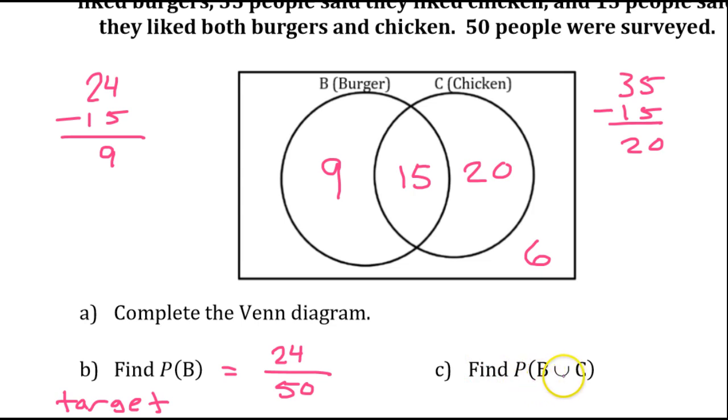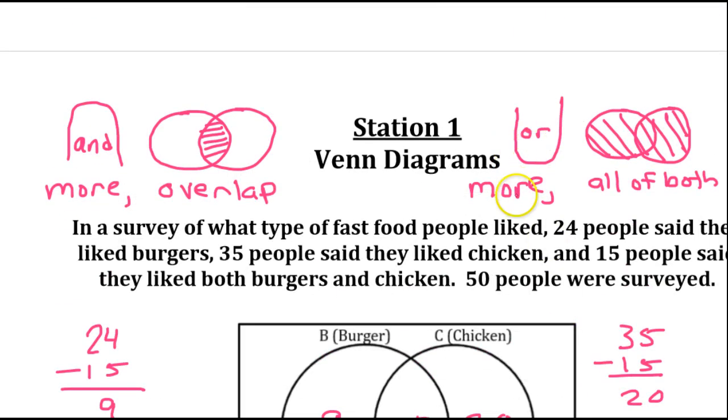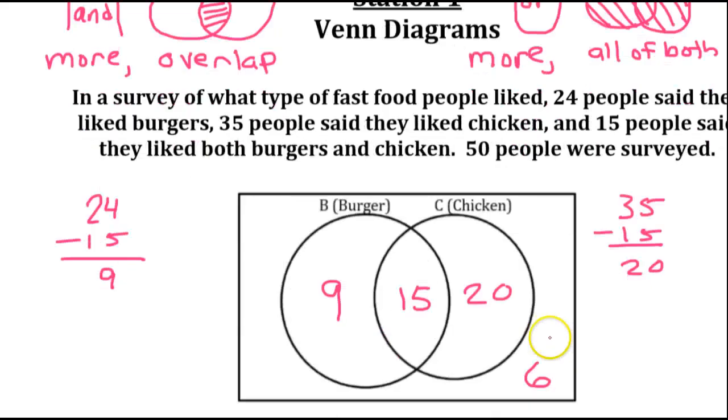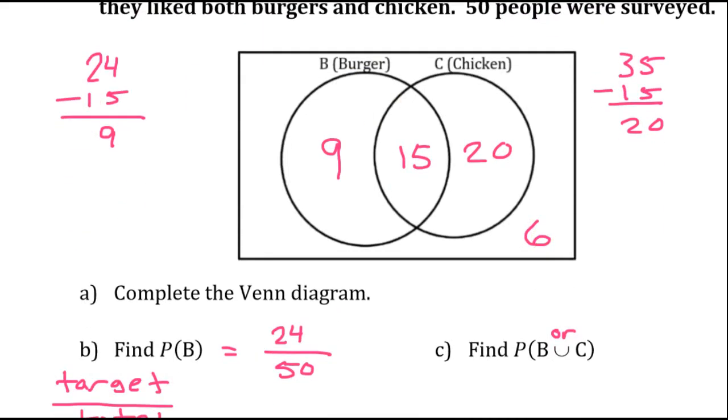The probability of B or C. That's what this symbol means, remember. This is B or C. And, like we said, when we see this symbol, it's going to be all of both. So, B or C is going to be all of the people who like burgers, which includes these 15 people. And, it will also be all of the people who like chicken. So, these three numbers represent the people that like burgers or chicken. It's just all of both sets. And, that is 44.